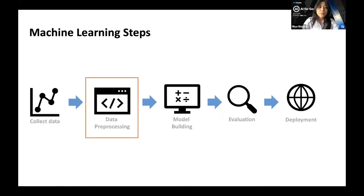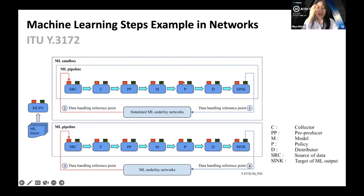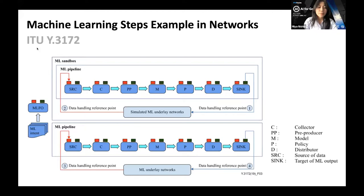We saw machine learning steps — now let's look at how they work in an actual real-life setting. This was taken from an ITU specification called ITU Y.3172, which you can find on the internet. It shows how a machine learning pipeline works in a communication network setting. You first have the source — in communication networks, these are devices such as our phones or computers. Data is collected from the source by the collector, then pre-processed in the pre-processor, which is then put into the model. The policy basically decides on the outcome depending on the machine learning model's output.